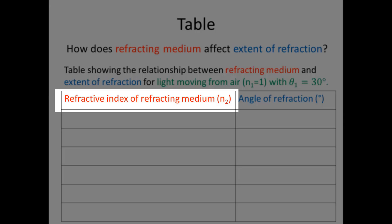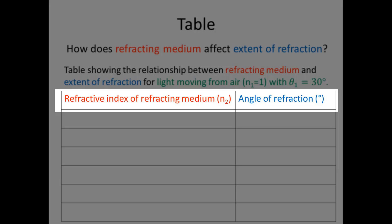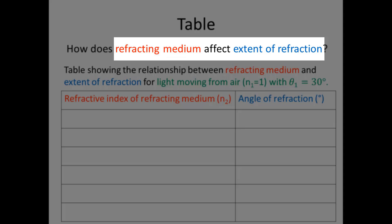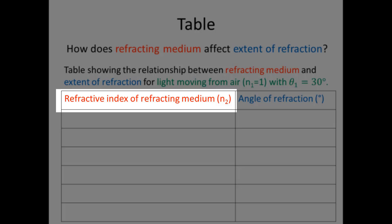The table headings don't necessarily have to be the independent and dependent variables themselves — they are indicators of those variables. In simple experiments the indicator and the variable are the same, but in more advanced investigations they are not. The independent variable is refracting medium, but we'll use a quantitative indicator: the refractive index of the refracting medium, n2, rather than a qualitative name like 'glass' or 'air'.